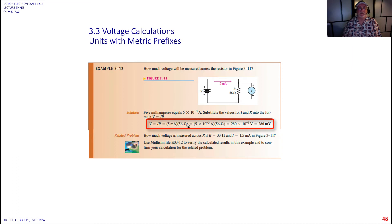I have 5 milliamps, 5 times 10 to the minus third amps. I have 56 ohms. So what I end up with, 56 times 5 gives me 280 and I have this exponent of 10 to the minus third. So that's going to give me back 280 millivolts of source voltage.